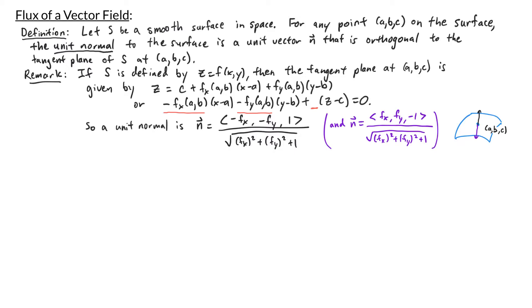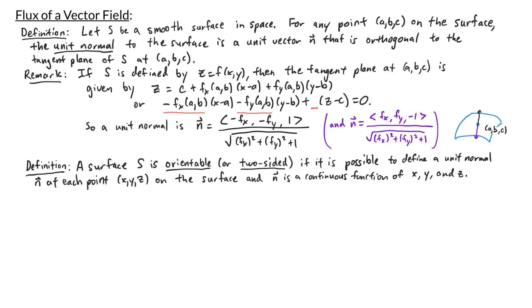Next we'll talk about orientable surfaces. We say that a surface is orientable, or two-sided, if it is possible to define a unit normal n at each point xyz on the surface and n is a continuous function of x, y, and z. Most of the surfaces we've looked at so far have been orientable — they have two sides, maybe an up and a down or an inside and an outside. An example of something that is not orientable is the Mobius strip. To form the Mobius strip, you take a strip of paper, twist one of the ends, then glue the ends together.